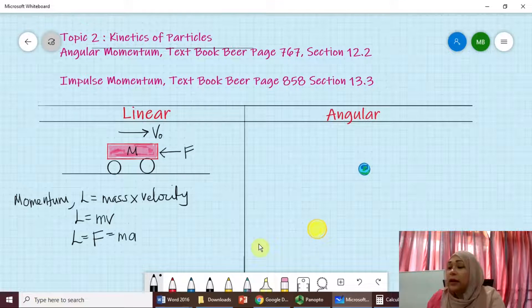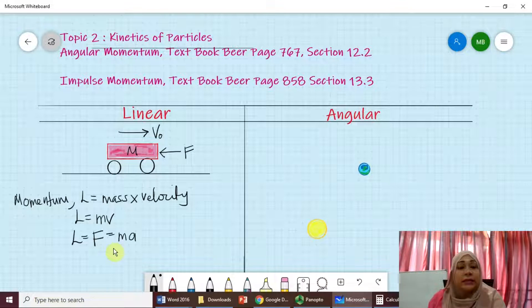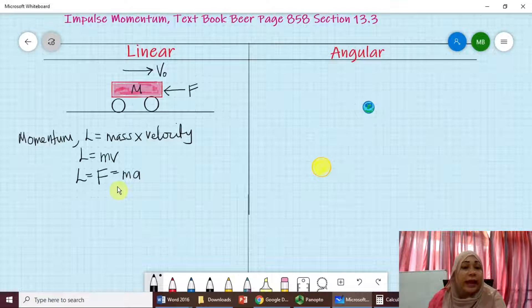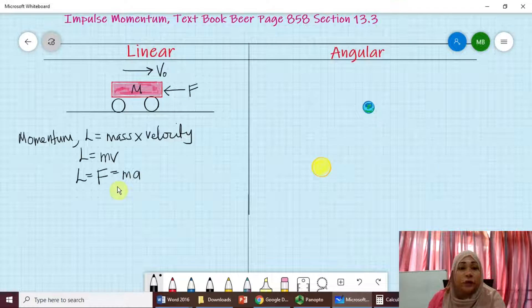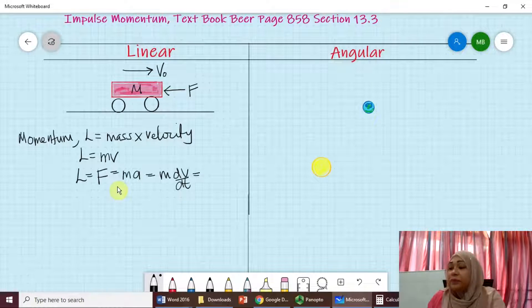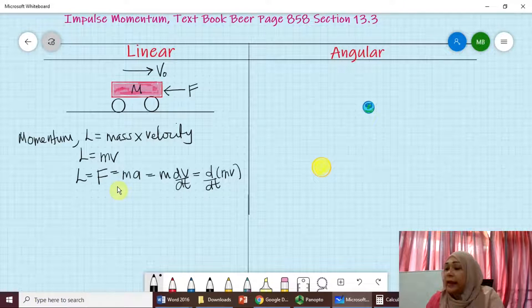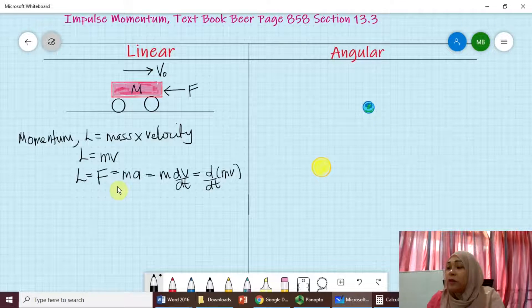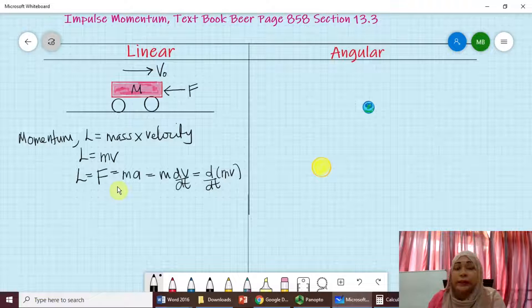Now we can consider the particle of mass M is acted upon a force F. As you can see, we can express this using Newton's second law. So MA is dV over dt. So again, you can express this in terms of like this, d over dt, MV. So it means it's the derivative of the mass times the velocity. And this is what you call the linear momentum.